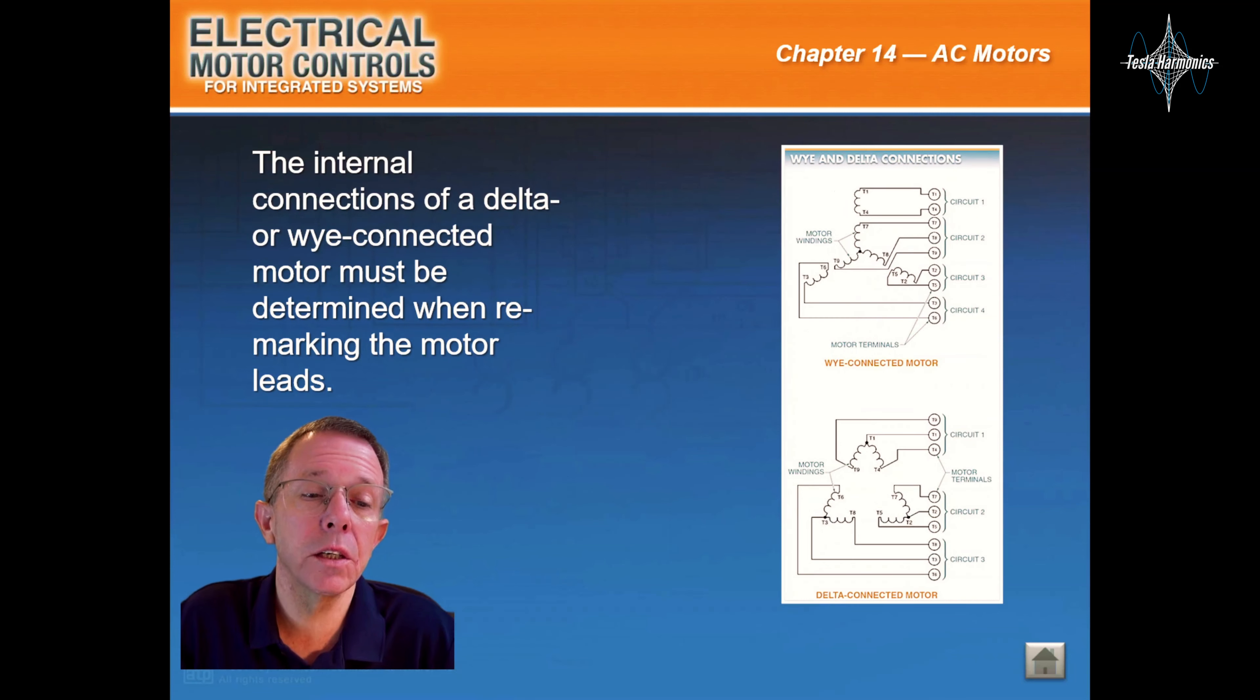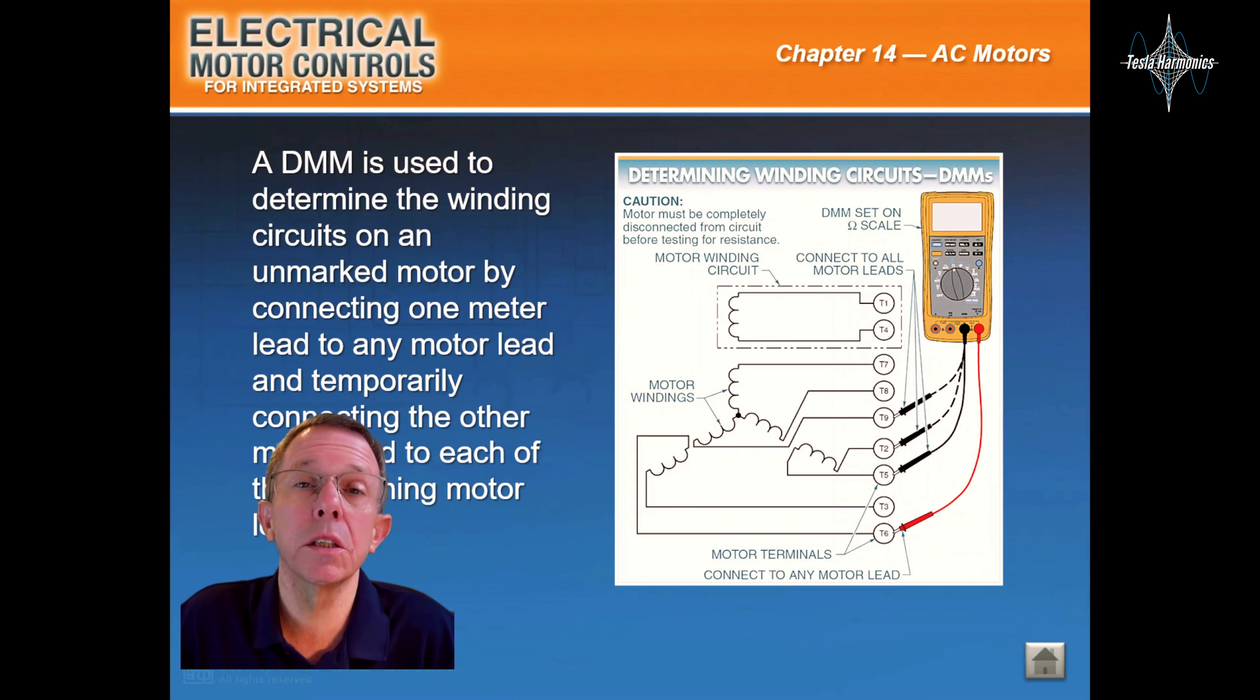The internal connections of a delta or wye-connected motor must be determined when remarking the motor leads. A DMM is used to determine the winding circuits of an unmarked motor by connecting one meter lead to any motor lead and temporarily connecting the other meter lead to each of the remaining motor leads.